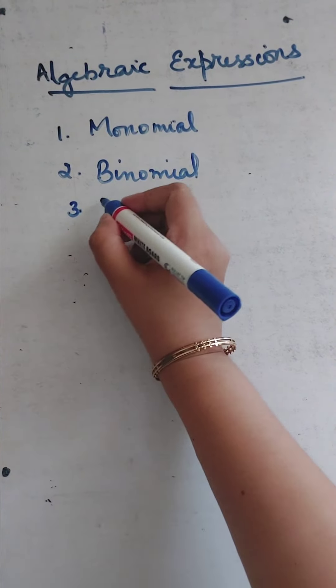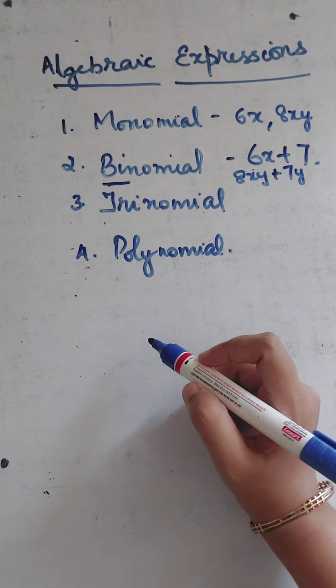Next one is binomial expression. 'Bi' means two, so binomial expression means we will have two terms. For example, 6x plus 7, or 8xy plus 7y — all these are binomial expressions. Since 'bi' means two, we will have two terms in the expression.